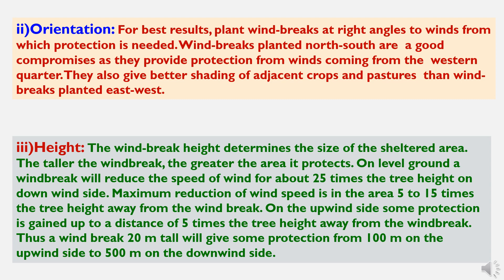The third characteristic is height. The windbreak height determines the size of the sheltered area — the taller the windbreak, the greater the area it protects. On level ground, a windbreak will reduce wind speed for about 25 times the tree height on the downwind side. Maximum reduction of wind speed is in the area 5 to 15 times the tree height away from the windbreak. On the upwind side, some protection is gained up to a distance of 5 times the tree height away from the windbreak.